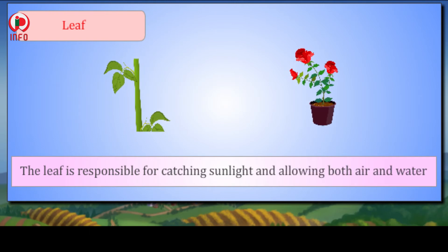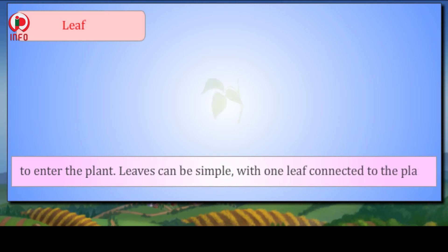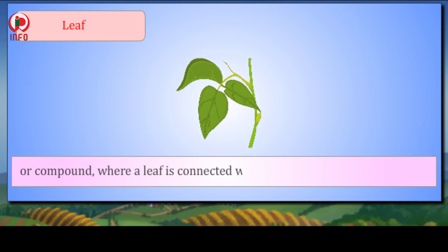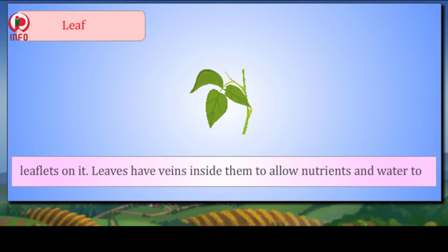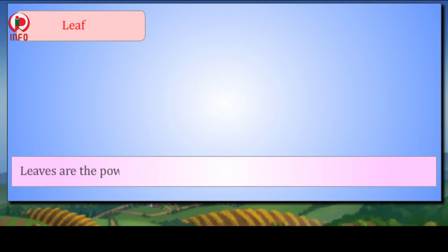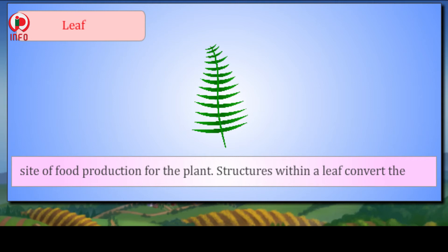Leaf: The leaf is responsible for catching sunlight and allowing both air and water to enter the plant. Leaves can be simple, with one leaf connected to the plant, or compound, where the leaf is connected with one petiole but has numerous leaflets on it. Leaves have veins inside them to allow nutrients and water to flow. Leaves are the powerhouse of plants. In most plants, leaves are the major site of food production for the plant.